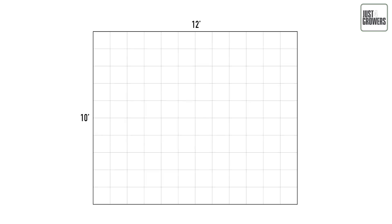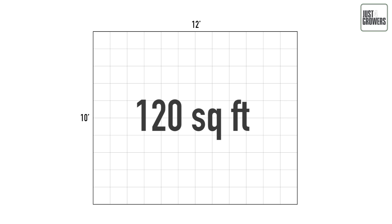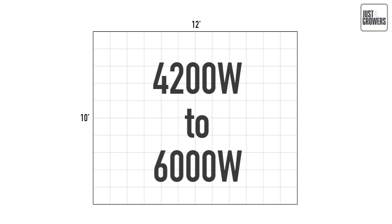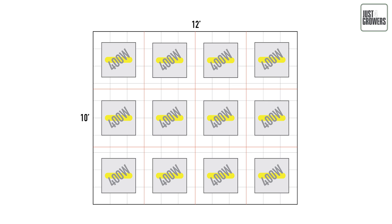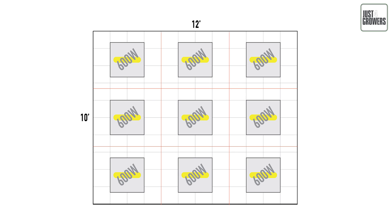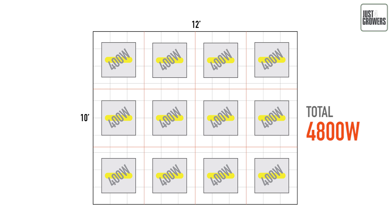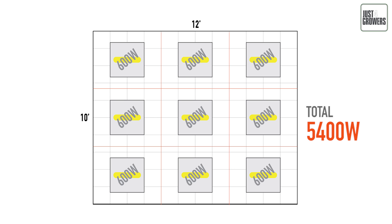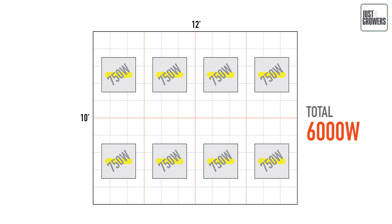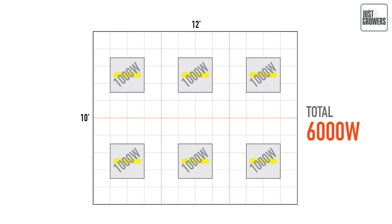For example, a 12 foot by 10 foot area — 120 square feet — will require between 4,200 and 6,000 watts. How you divide that into separate lighting fixtures — 400 watt, 600 watt, 750 watt, 1,000 watt, etc. — often comes down to the vertical space you have available for plant growth, the type of reflectors you wish to use, and the actual dimensions of your grow space.